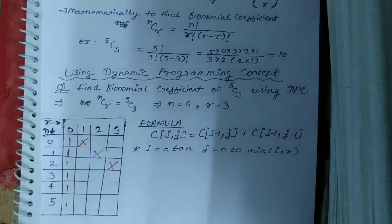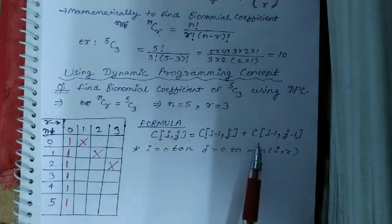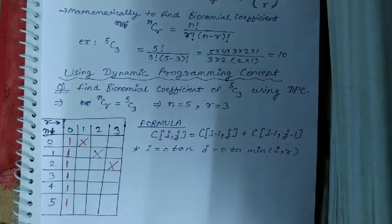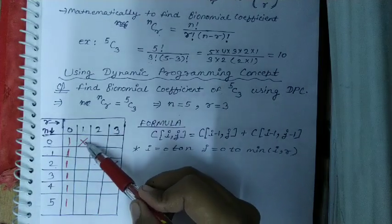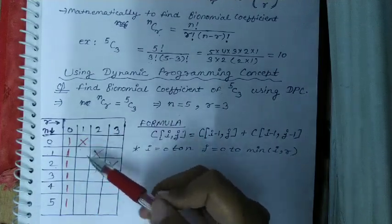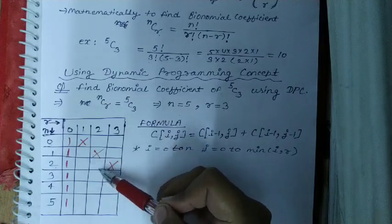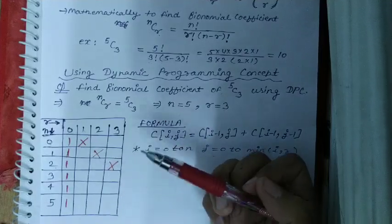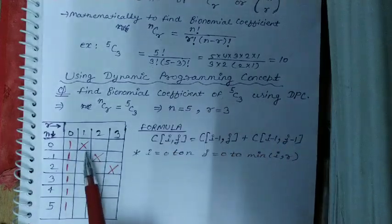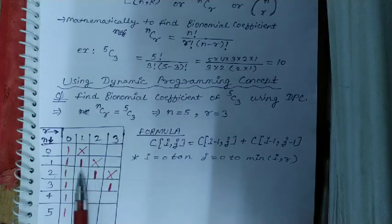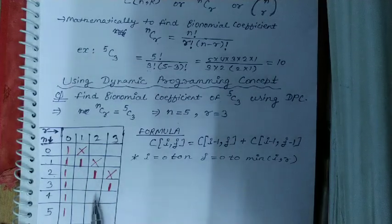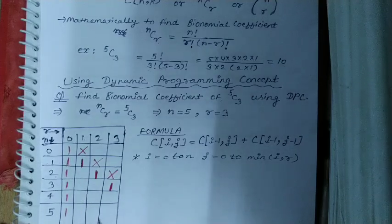After the crosses, the diagonal that is just below those crosses — you have to fill that diagonal with all ones as well.